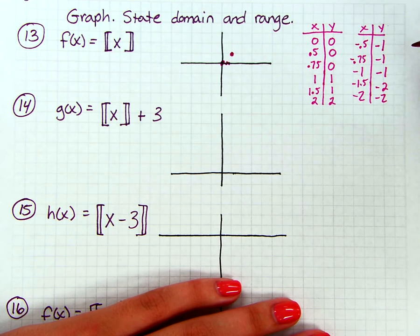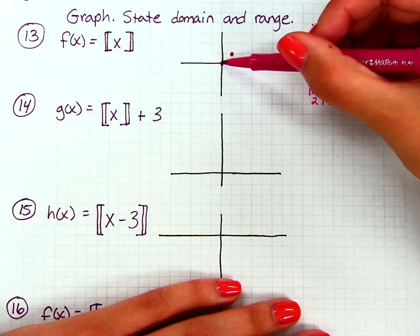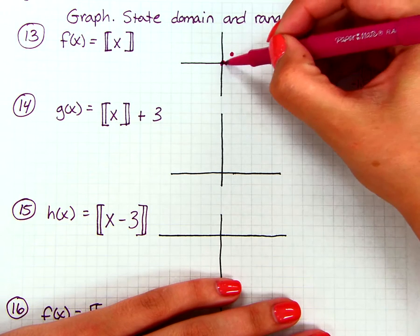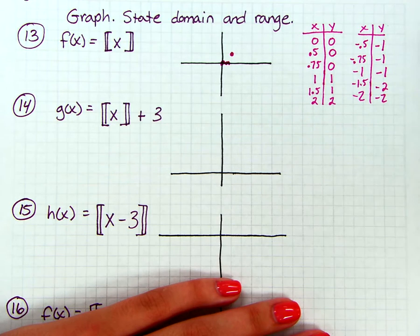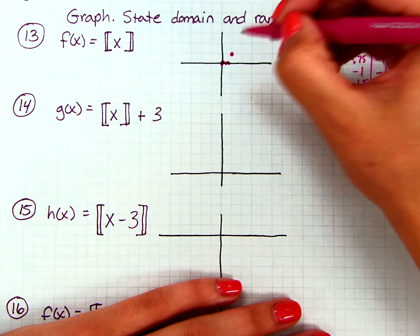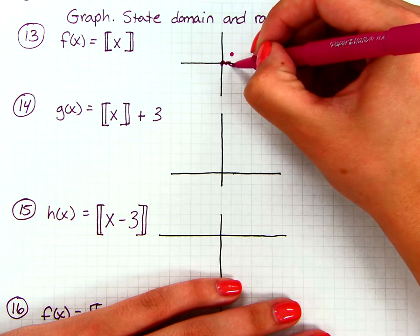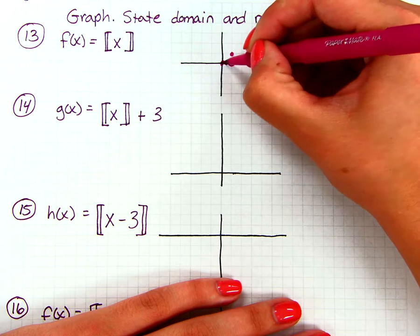So what's happening is that for my x values between 0 and 1, we have everything on this line up until 1. But we don't include 1 on the 0 line. So that really means that I'm going to have to draw an open circle right here, and then we have that segment connecting it.